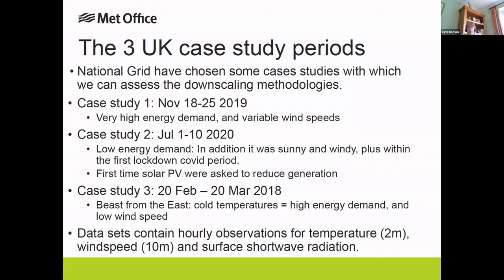We have three case studies given to us by Daniel. One was from November 18th to 25th, 2019 — a period with very high energy demand and very variable wind speeds. Then we had a very warm period from July 1st to 10th in 2020, a period of low energy demand with lots of sun and wind, during the first COVID lockdown — the first time solar PV were asked to reduce generation. The third case study was the Beast from the East, back in 2018 from February to March. What we were interested in downscaling in those periods was the temperature, wind speed, and surface shortwave radiation from daily values to hourly values.